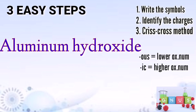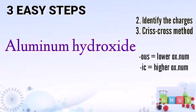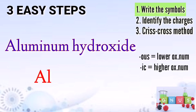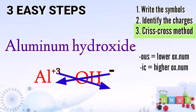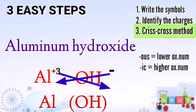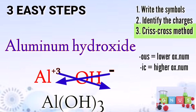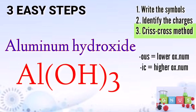For our next example, we have aluminum hydroxide. For the first step, write the symbols: aluminum is Al, and hydroxide is OH. Next, let's identify the charges of the elements or compound. Aluminum is positive 3, and hydroxide is always negative 1. Now perform the criss-cross method: the charge positive 3 of aluminum will become the subscript of our hydroxide, and the negative 1 of hydroxide becomes the subscript of aluminum. Therefore, the final formula for aluminum hydroxide is Al(OH)₃.